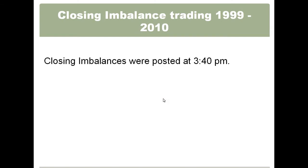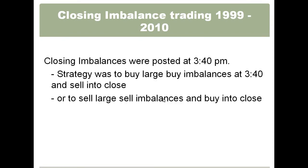Closing imbalances were another strategy. Closing imbalances used to be posted at 3:40; they changed that two years ago and they're now posted at 3:45. Basically all of the MOC — market on close — orders are sent by institutions or opportunistic traders. Any market on close order to buy the stock would be posted as part of a buy imbalance; any market on close order to sell a stock would be posted as the sell imbalance. So if there's 10,000 more shares to buy than sell, it will post as a 10,000-share buy imbalance.